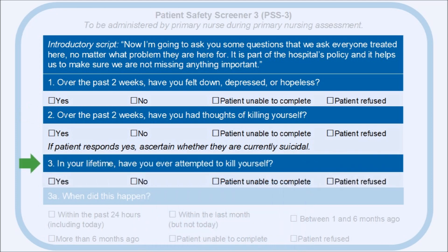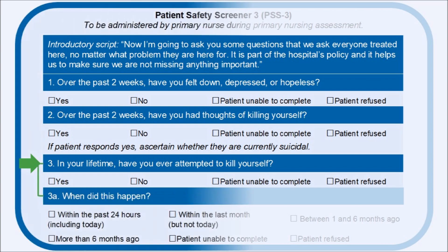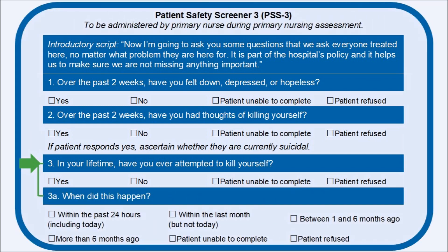Question 3: In your lifetime, have you ever attempted to kill yourself? Question 3 asks about the patient's lifetime history of suicide attempt, which is one of the most consistent predictors of future suicidal behavior. Again, this question should be asked exactly as it is worded. Question 3a is only asked if the response to question 3 is yes. The timing of a patient's most recent attempt helps to more accurately determine if a patient is at acute risk. In the acute care setting, we consider a suicide attempt in the past six months to be recent and clinically relevant.